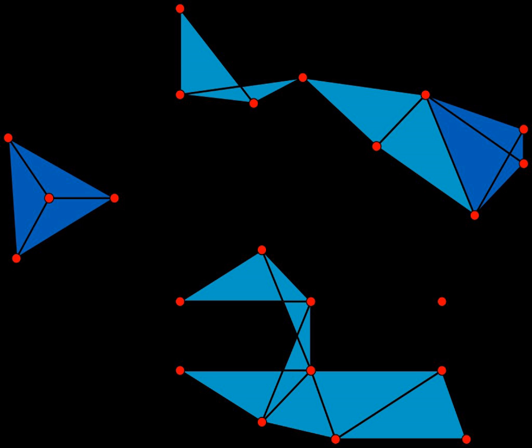In the mathematical area of graph theory, a clique is a subset of vertices of an undirected graph such that every two distinct vertices in the clique are adjacent, that is, its induced subgraph is complete.